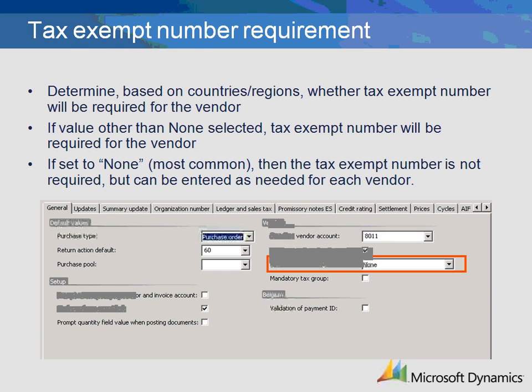The Tax Exempt Number Requirement field serves to define whether the tax exempt number is required for vendors. First, you should decide whether the tax exempt number should be required for vendor records, and if yes, decide for which countries. If you do not want to require a number, select None, and they can be manually entered for vendors where a tax exempt number is applicable on a vendor-by-vendor basis when creating them.